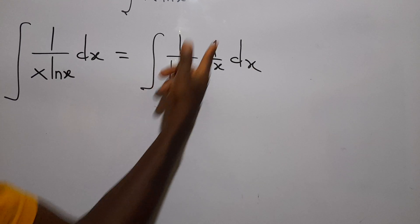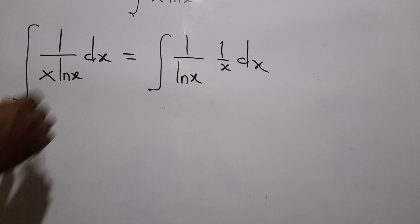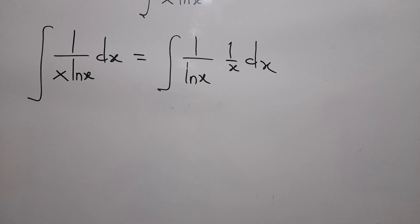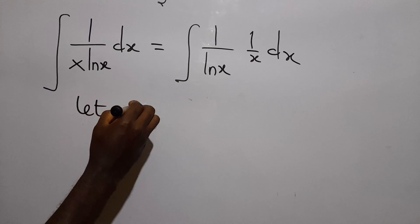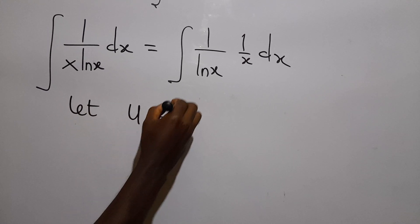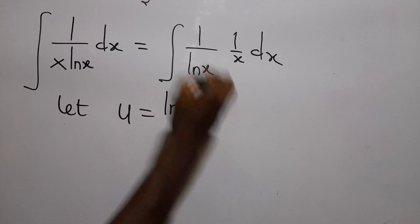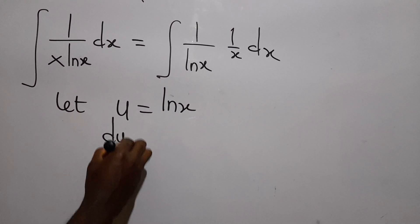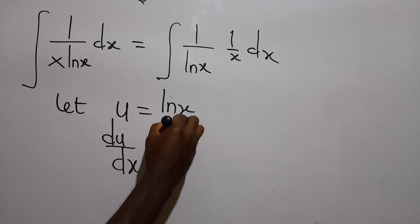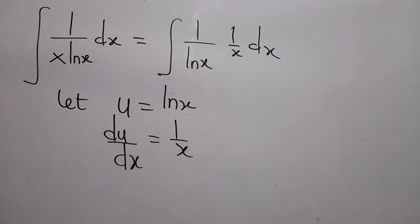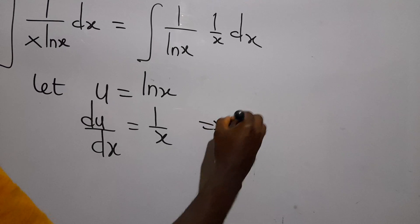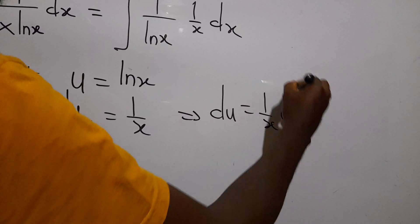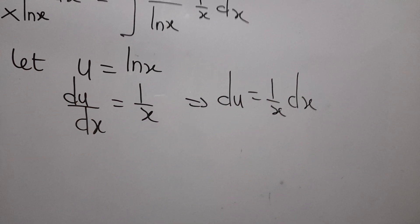Remember when we differentiate ln(x) we get 1 over x, so we use integration by substitution to solve this problem. We let u equal ln(x). If u equals ln(x), then du/dx equals 1 over x, and therefore du equals 1 over x dx, multiplying both sides by dx.